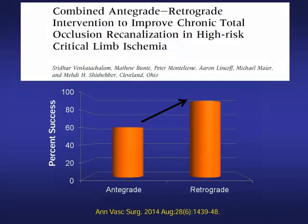Do you go retrograde after trying antegrade for five minutes, 10 minutes, 30 minutes? Based on the equipment and number of wires used — after five wires, four wires, eight wires? After using a CTO device? How many CTO devices? Do you stage the procedure if antegrade didn't work? In our institution, we have a low threshold to go retrograde. We typically go by time — if we try for five to ten minutes and it doesn't work antegrade, we then go to a retrograde approach.